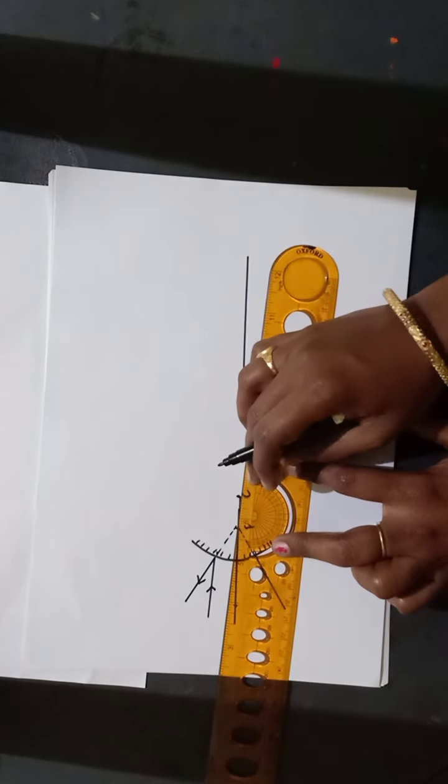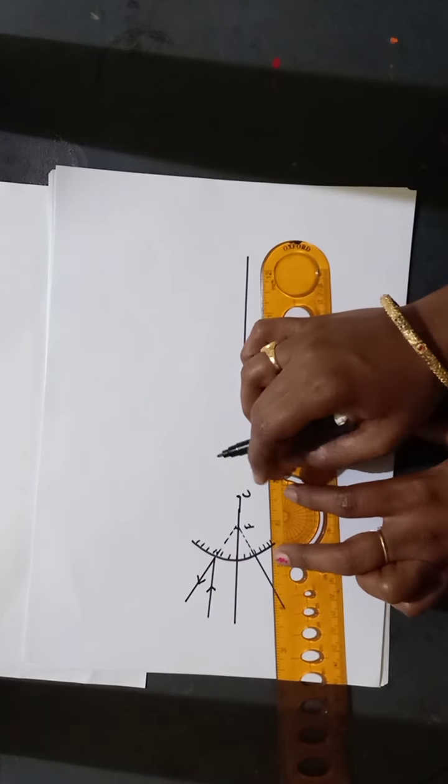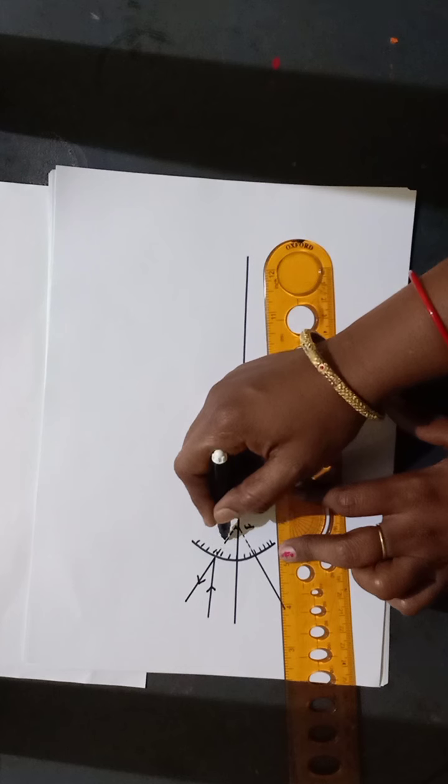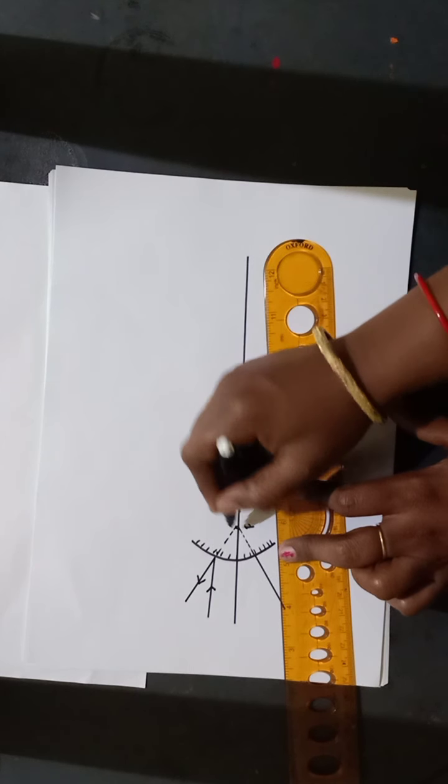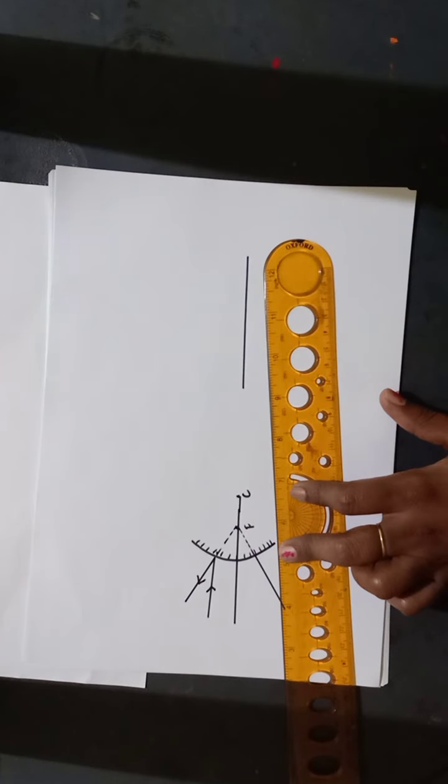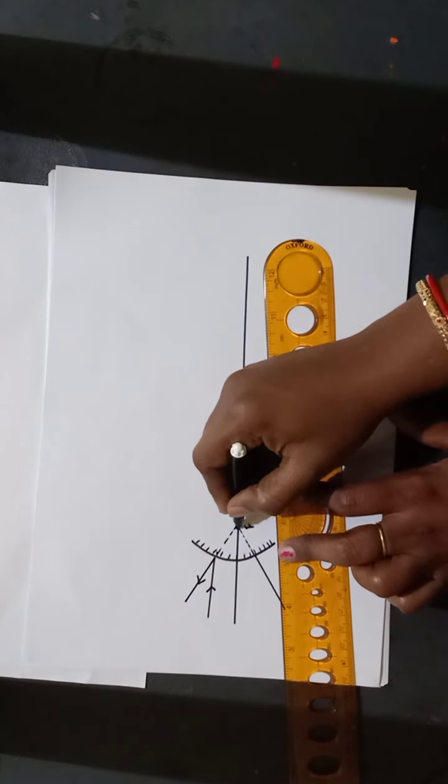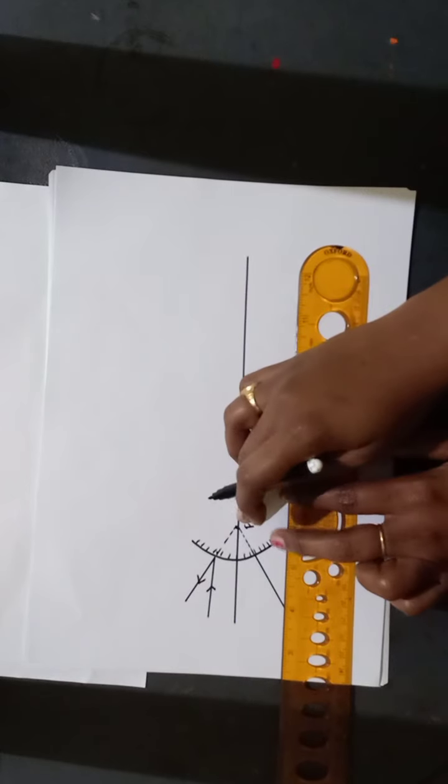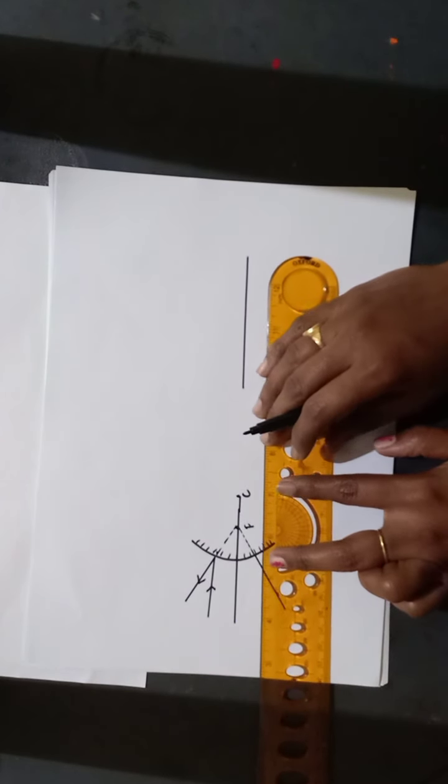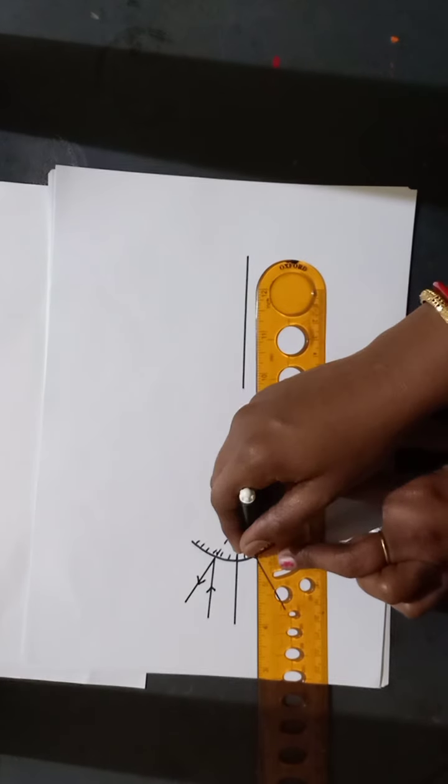So it is diverging. So as the image is formed behind the mirror, so we need to extend the ray. As it is diminished and when the object is at infinity, the image will be formed at the focus. So we have put a point on the focus. Now it's very simple. Next line also you join.